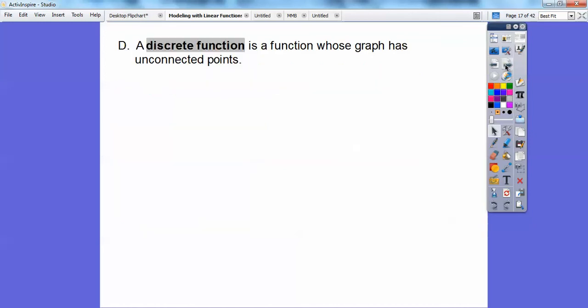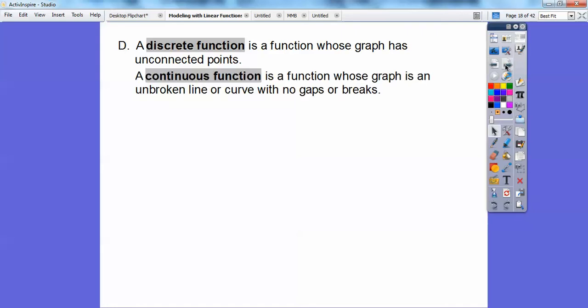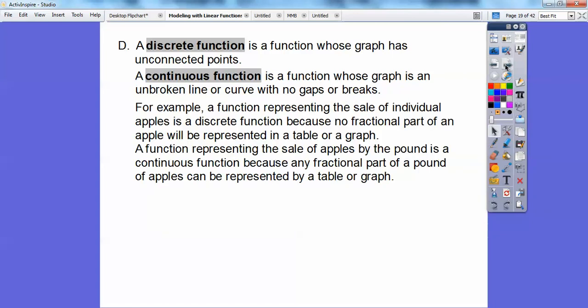A discrete function is a function whose graph is unconnected points, where there's no connection of a line. Continuous function is where the graph is an unbroken line or curve. It keeps going, it doesn't just separate by points.